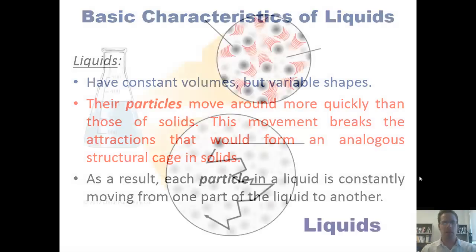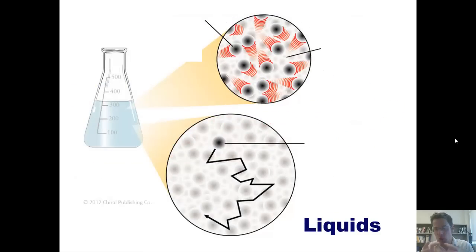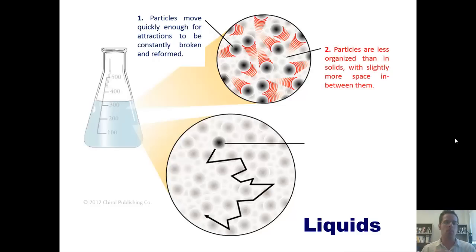Let's take a look at an example liquid contained within this flask. If you were able to zoom in visually so close that you could see the individual particles of liquid here within this flask, you'd notice that they move around quickly enough for the attractions between the particles to be constantly broken and reformed. Furthermore, particles inside a liquid are much less organized than in solids with slightly more space between them. Beyond this, particles inside a liquid also move throughout the container, which is different from those in a solid. The container is, of course, responsible for holding the liquid's shape. Although the volume in a liquid remains constant, its shape does not.